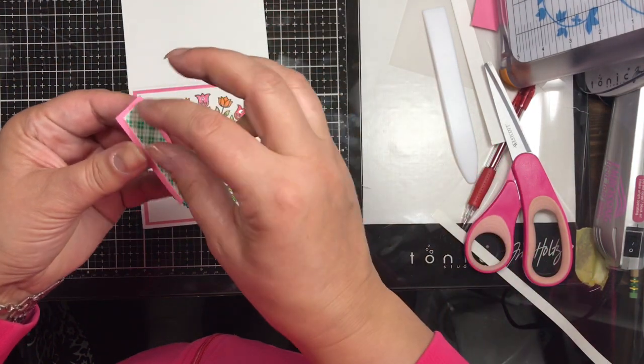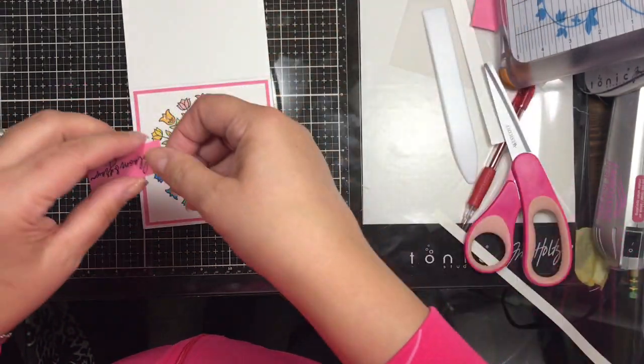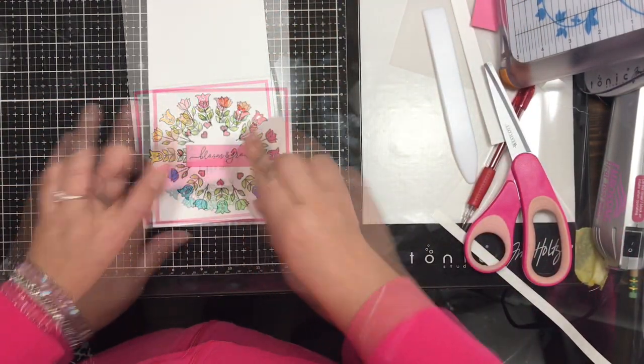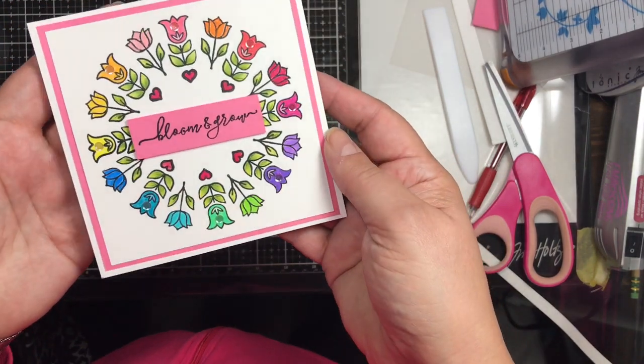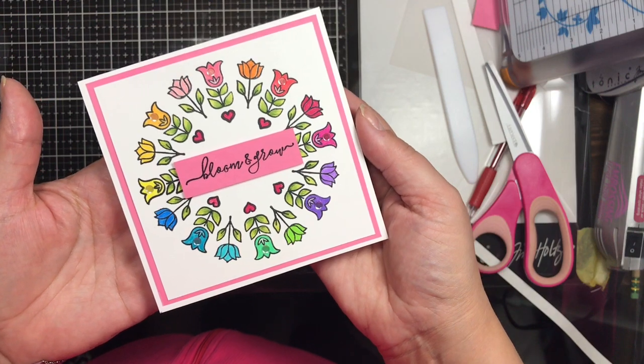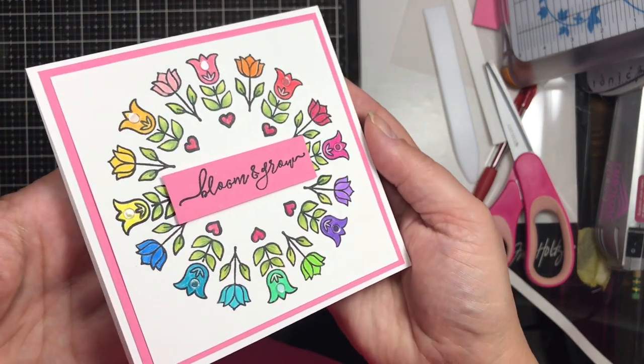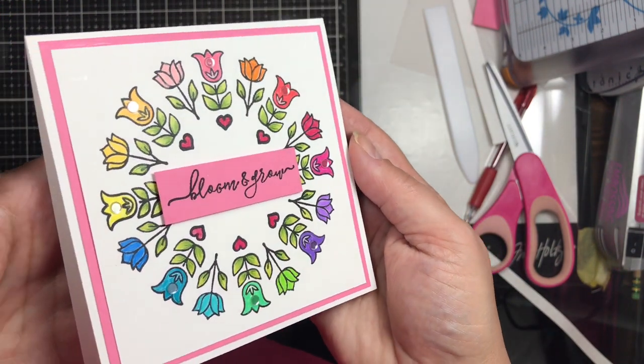I skipped one of the flowers each time, and I also put a piece of foam adhesive on the back of my sentiment, centered that up on the card in the center. There is my finished card. I think it turned out great and I love how it turned out. I love how those sequins pick up the colors of each one of those flowers and I just adhered them with some glossy accents because I think that's a pretty strong adhesive.